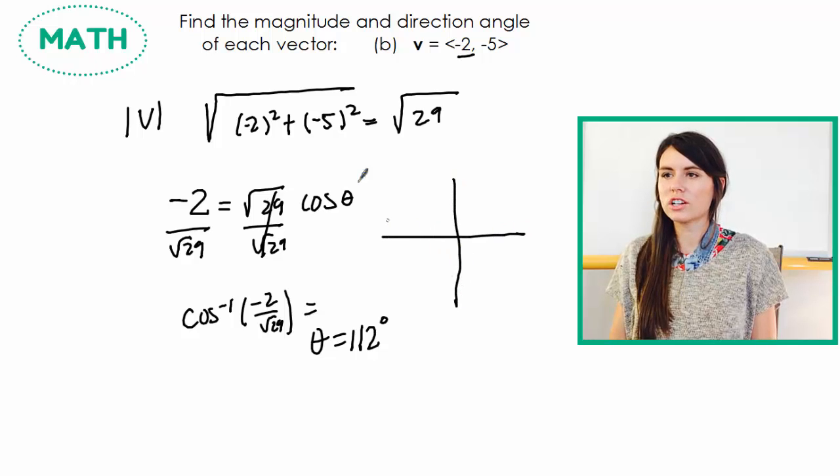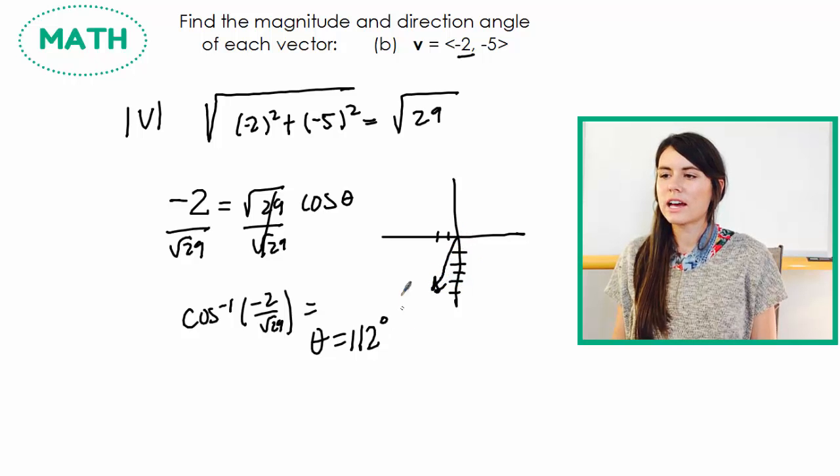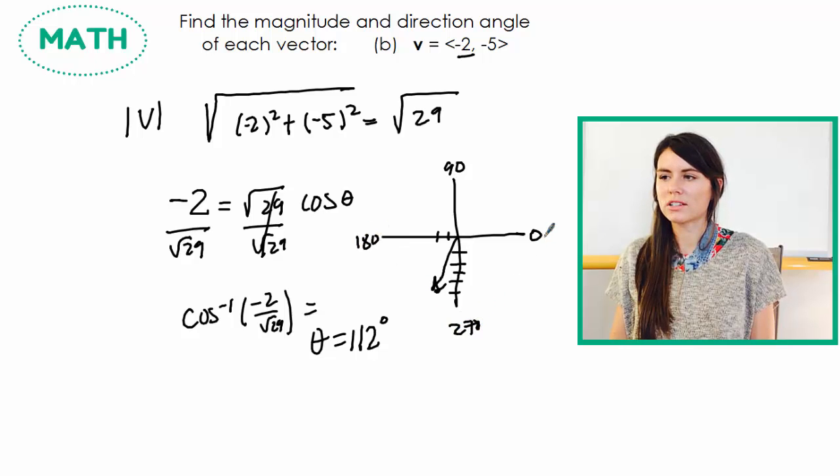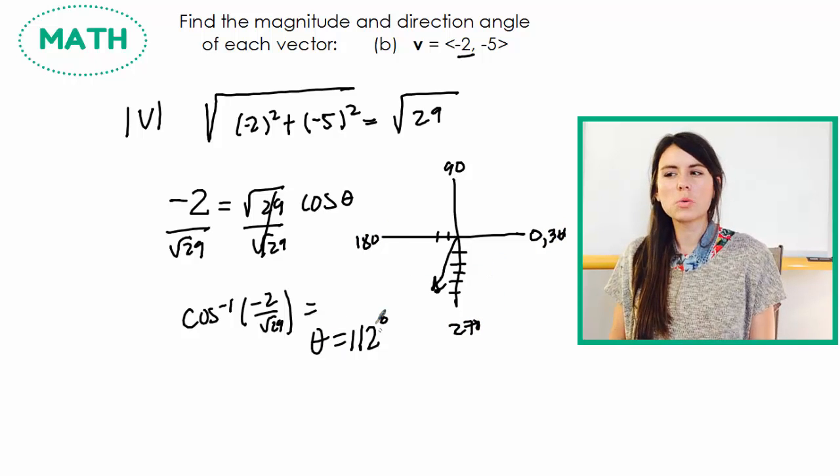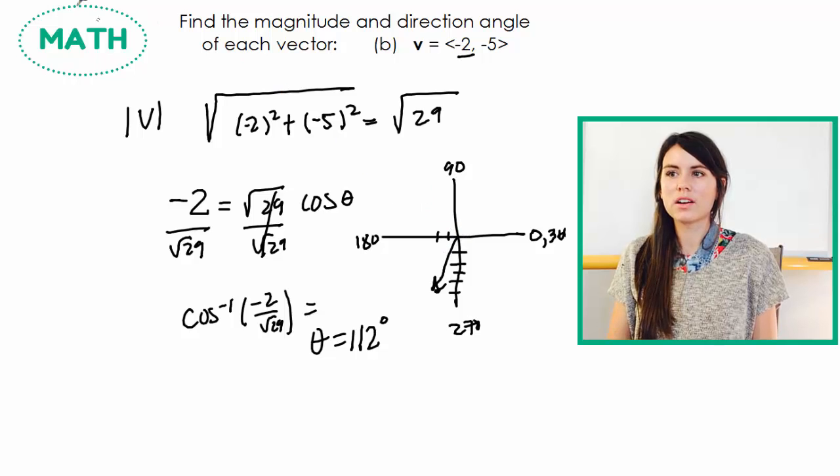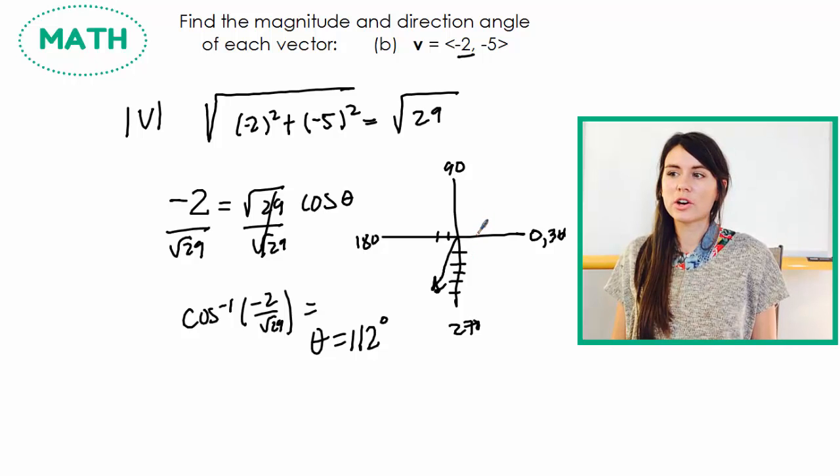So let's look at, let's draw on our vector and see if that even makes sense. So I'm at negative 2, negative 5. So negative 2, negative 5 is going to be right there-ish. Now if I'm on the unit circle, this is 0, this is 90, this is 180, and this is 270, and then back to 360. So 112 is not down here, where my vector is supposed to be, 112 would be up here, which just means when I find my angle, I have two options. I can go counterclockwise and follow the unit circle, or I can go clockwise and get to my vector.